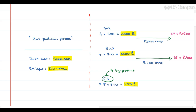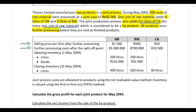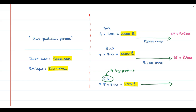All products are processed further before being sold. We are given the selling price after further processing — for CA it's 50 Rand — and we also have further processing costs after the split-off point, which we'll include in the diagram.